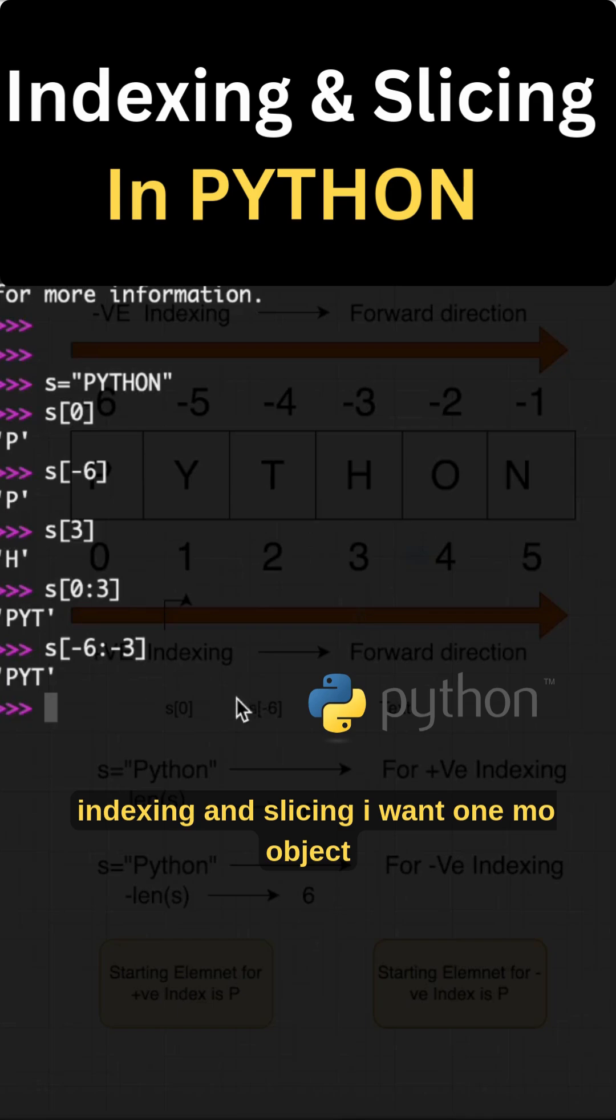I want one more object. I want to get one more value, suppose minus 5.